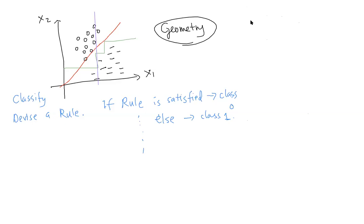There are actually many, many ways to draw that rule. Of course if you cut a certain way you will make some errors, but we're not too concerned about errors now. It turns out there are a huge number of rules you can use to classify objects in this simple space — you can have lines in different orientations and positions.